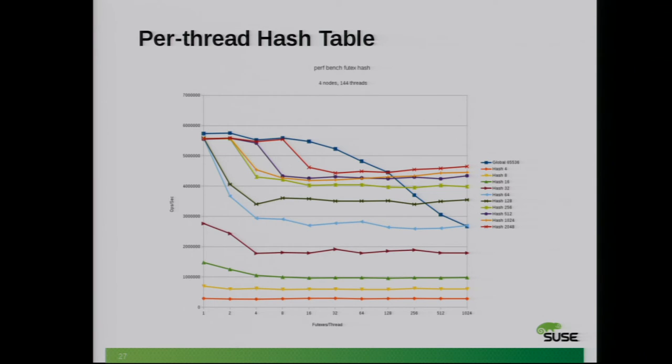The only ones that scale and don't flatline are the per-process hash tables with large numbers of buckets. In this case, the best one had 2,000 entries. That allows that when you're operating on pathological cases of 128 threads and beyond, you really avoid those performance pitfalls. But again, this is very specific to the amount of locks you're using in user space.